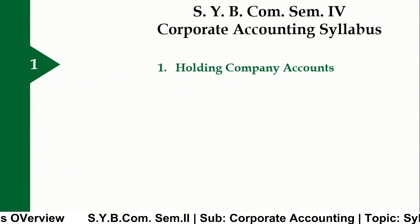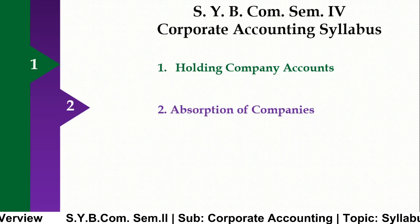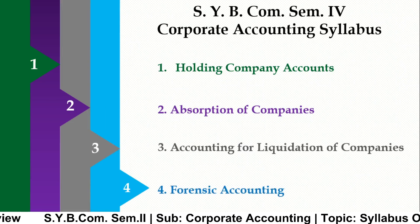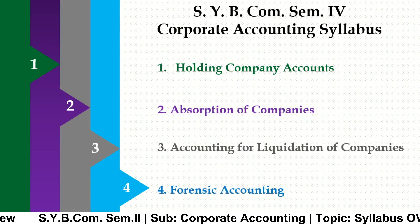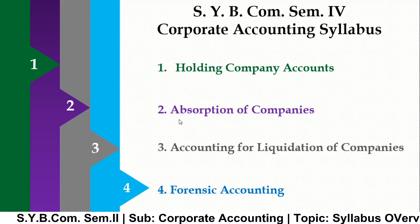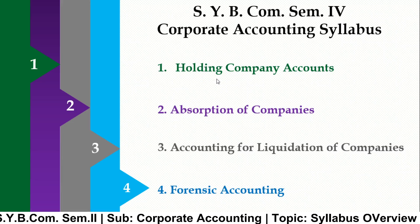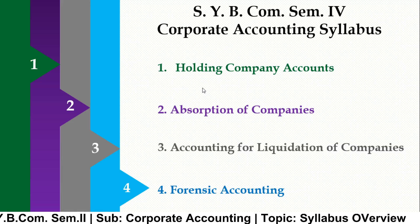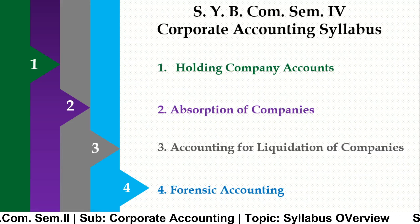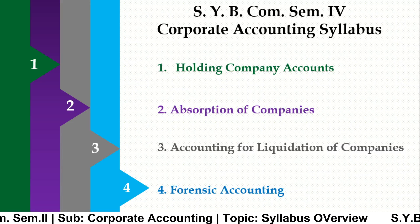Here you can see the syllabus of Semester 4 for Corporate Accounting. The first chapter is Holding Company Accounts, the second chapter is Absorption of Companies, the third is Accounting for Liquidation of Companies, and the fourth is Forensic Accounting. We have to study these four chapters for Semester 4. In the first chapter, we will study how one company holds another company.